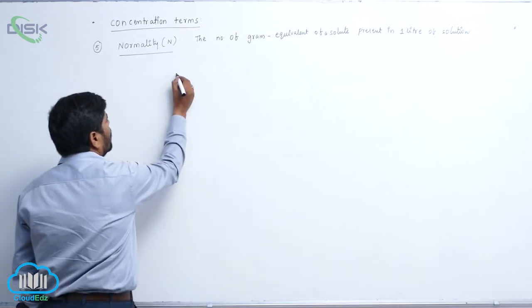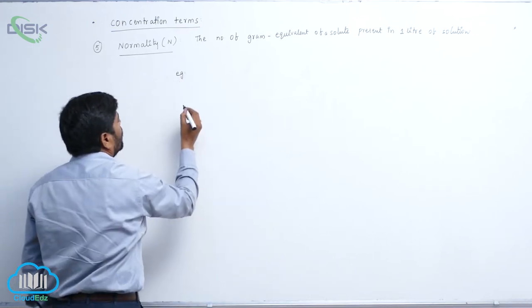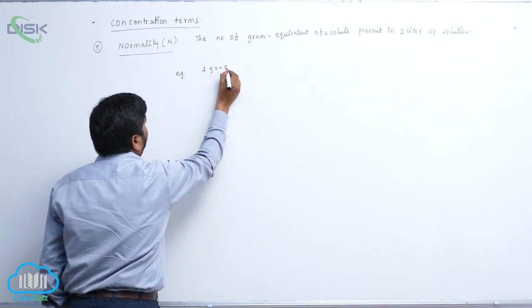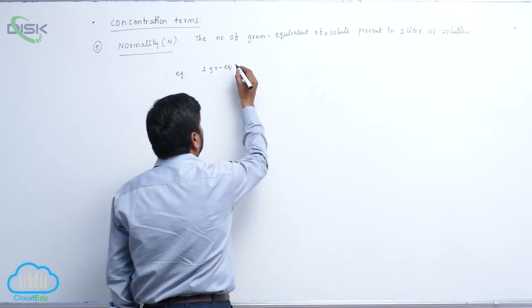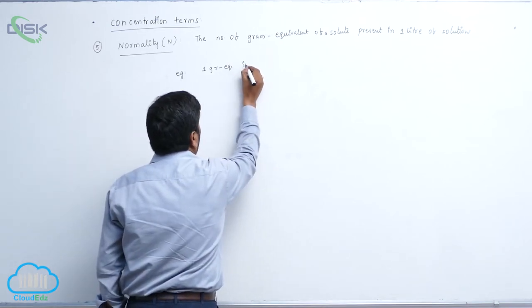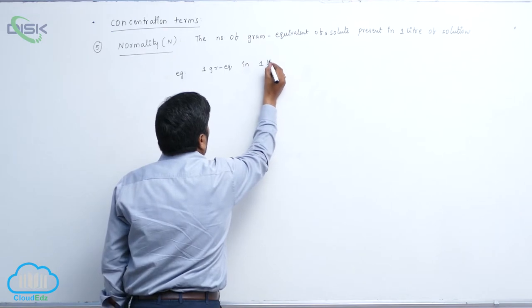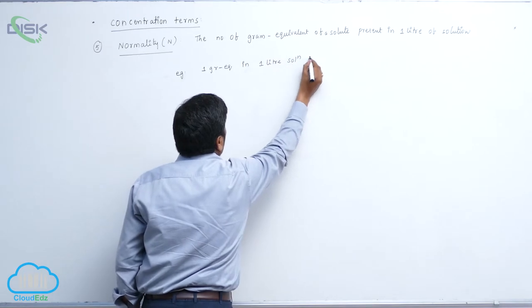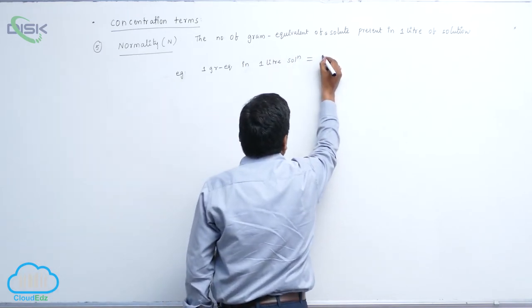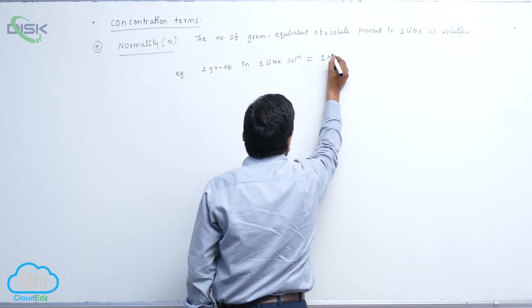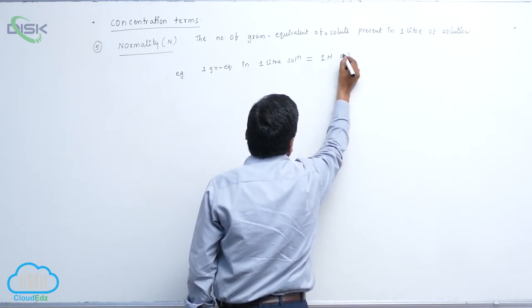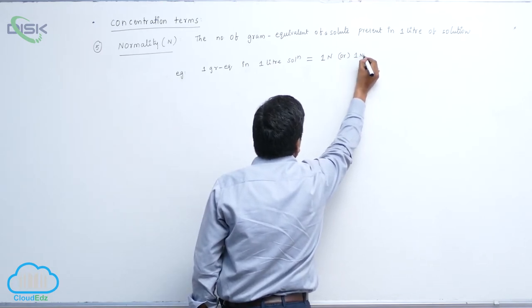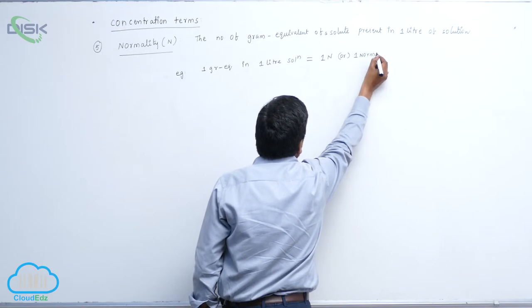For example, 1 gram equivalent in 1 litre of solution equals 1 normal, or 1 N solution.